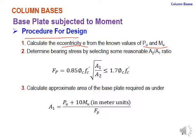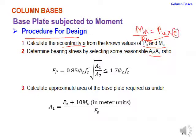We determine the bearing stresses by selecting a reasonable A2/A1 ratio. The eccentricity e is calculated using the formula Mu = Pu × e, so e = Mu/Pu. This eccentricity is your input data for the design procedure.